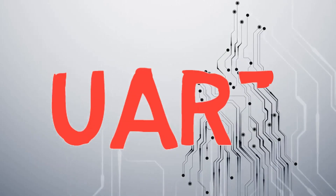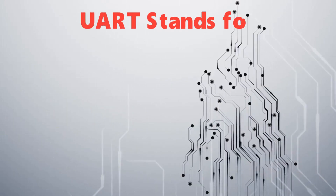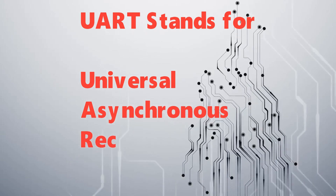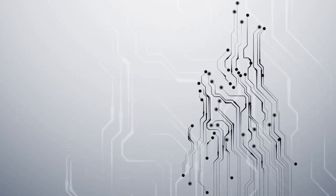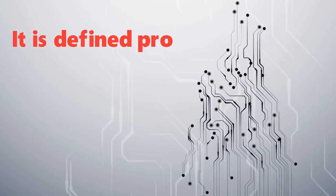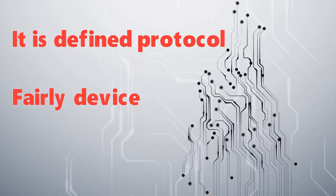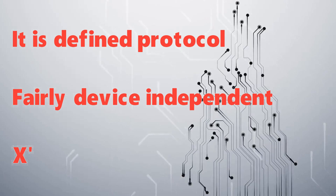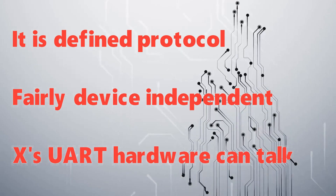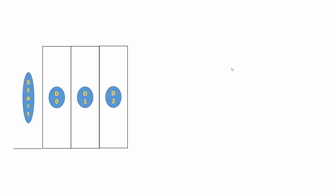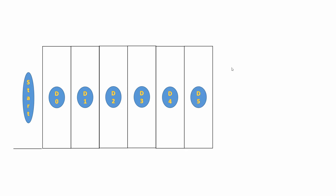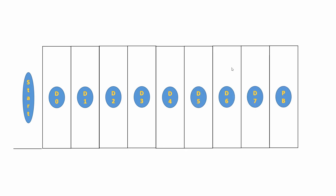Let's move to UART. UART stands for Universal Asynchronous Receiver Transmitter. It is a defined protocol and is fairly release-independent, meaning you can connect any UART device to any other UART device — such as a PC — by following the protocol. The UART frame consists of a start bit, followed by seven or eight data bits, an optional parity bit, and a stop bit. The stop bit can be one or two bits.